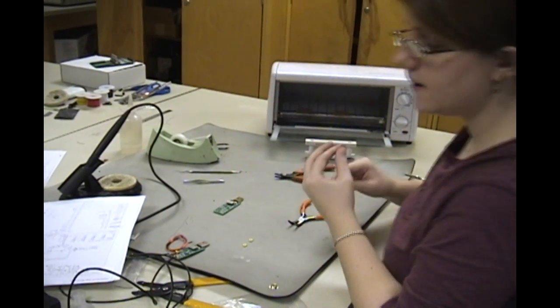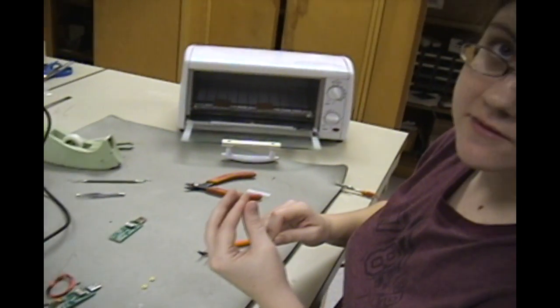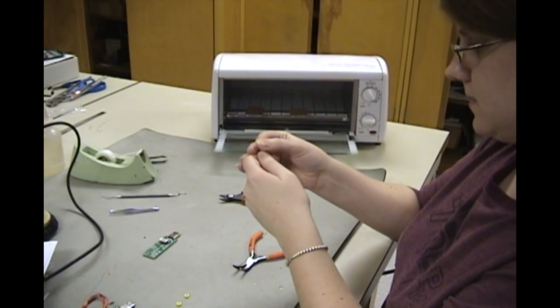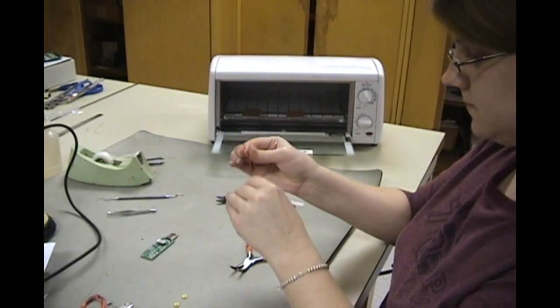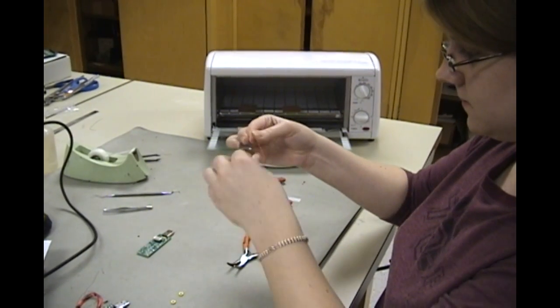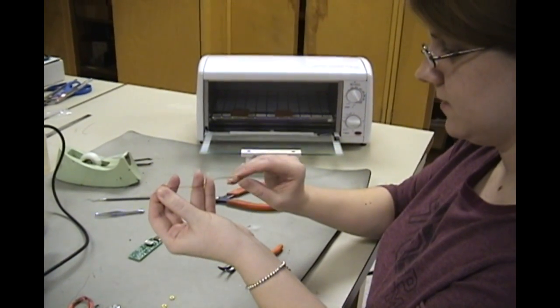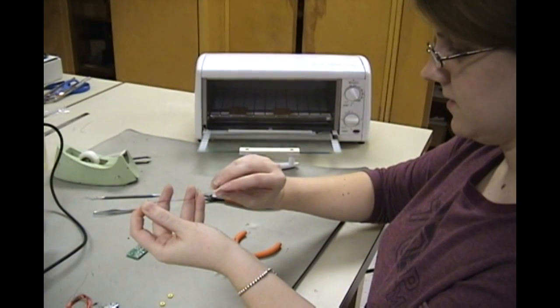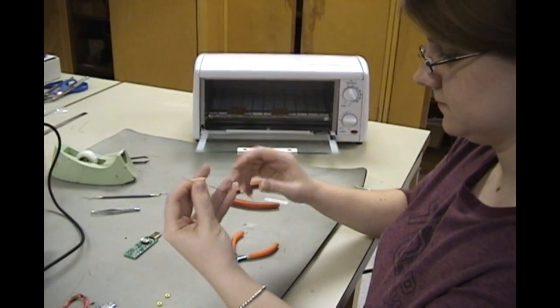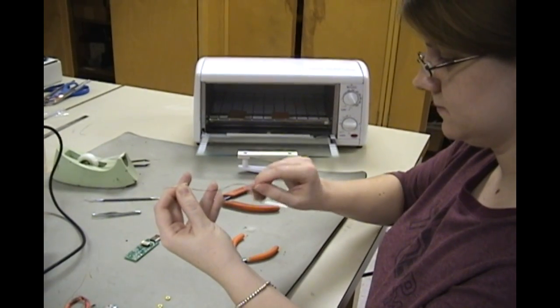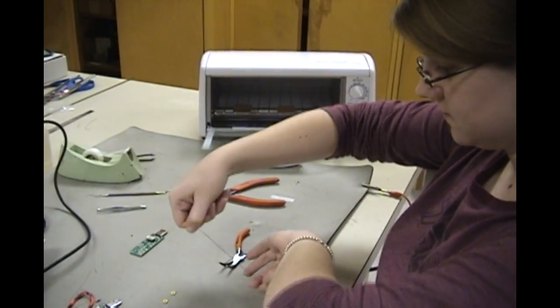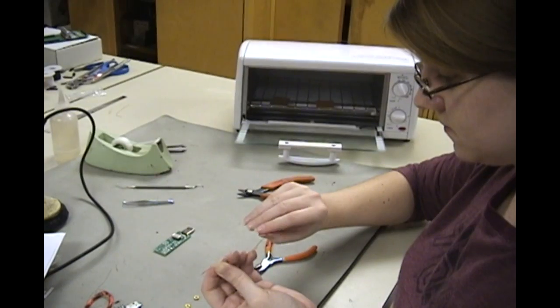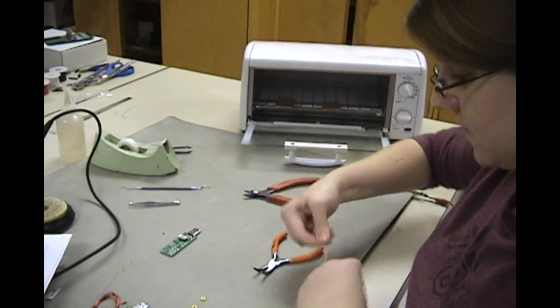And then we will fold it in half. Because it is a bi-filar wound, bi-filar. So you should have about 6 inches for each half. And go ahead and twist them together a little bit, so they stay well together.